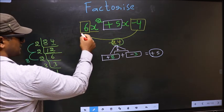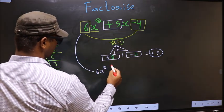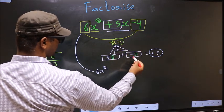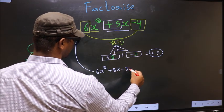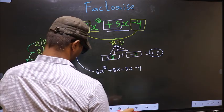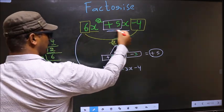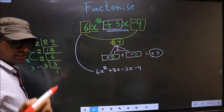Now change this to 6x². In place of +5x, now we should write this: that is +8x - 3x - 4. Did you understand? In place of +5x we have written this. Next.